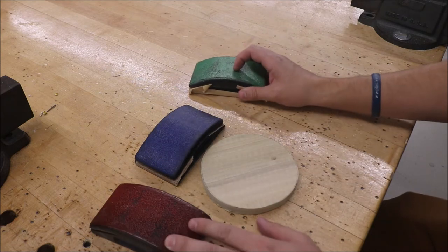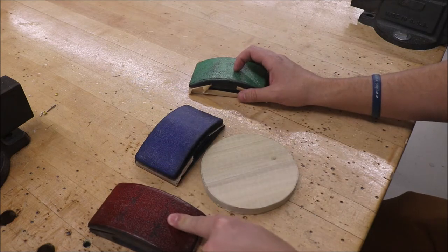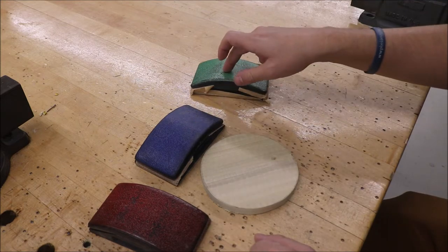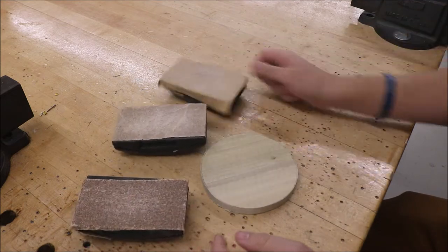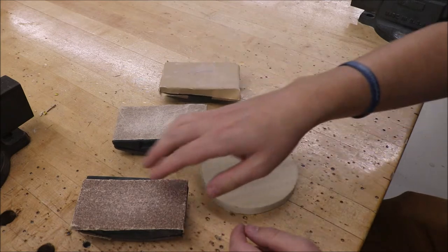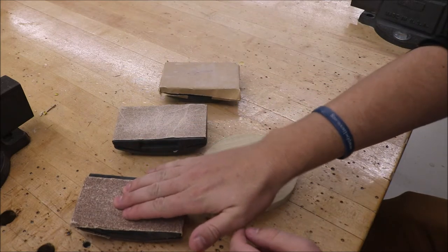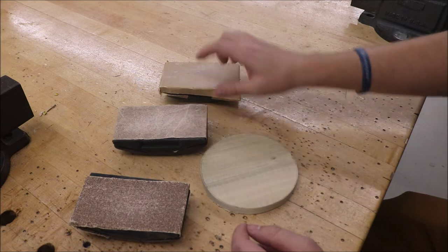Now you can tell the difference just because the coarse I have labeled as red, the medium is blue, and then the green one is fine. Or if you flip them upside down, the coarse is usually the darker of all the three, medium is kind of in between, and then the lightest is the fine.